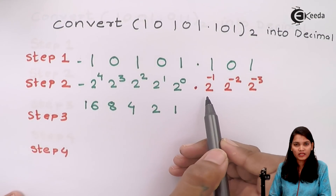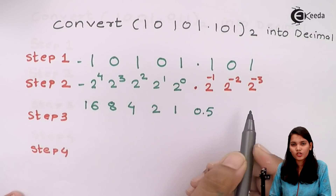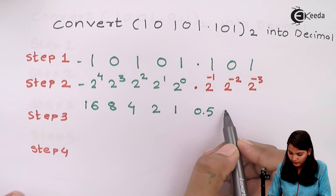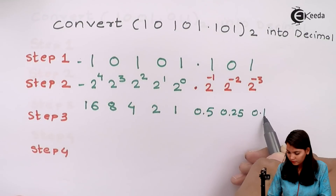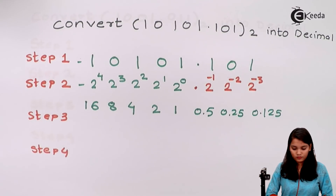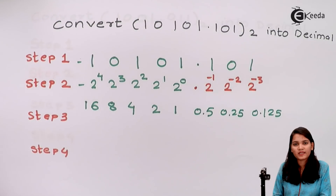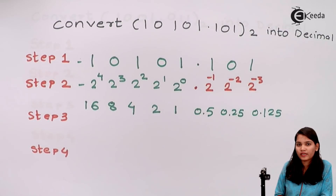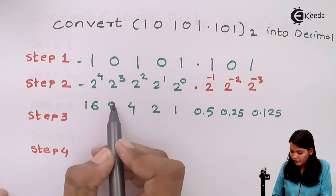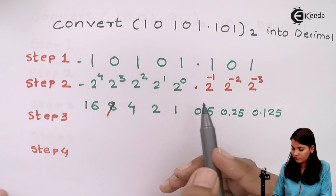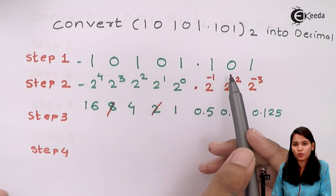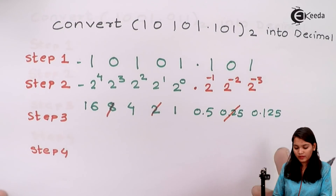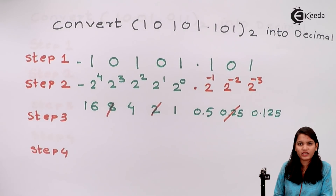So 2 raise to minus 1 gives 0.5, 2 raise to minus 2 gives 0.25, and 2 raise to minus 3 gives 0.125. Now cancel out the weightage values placed below 0 bits. There are 3 zeros total. 8 is cancelled, 2 is cancelled, and after the decimal point one 0 means 0.25 is also cancelled. Let's write down the remaining weightages.